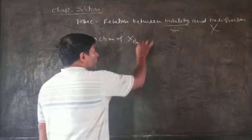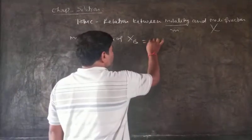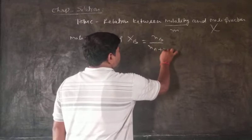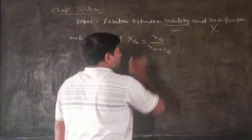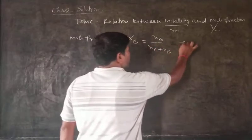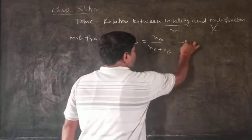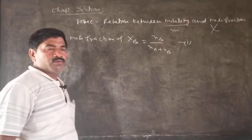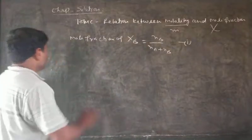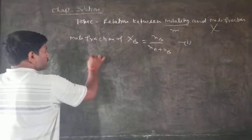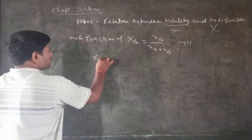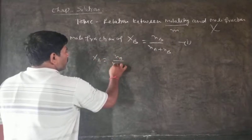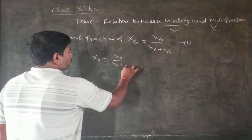Mole fraction of solute xB is equal to nB upon nA plus nB, and mole fraction of solvent xA is equal to nA upon nA plus nB.